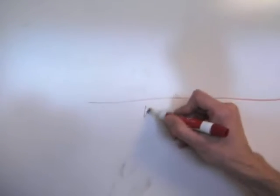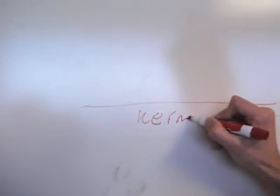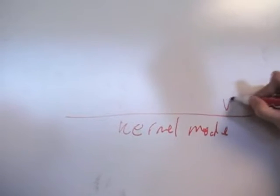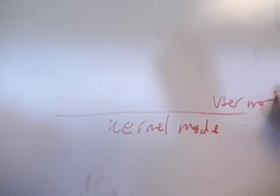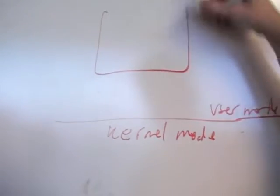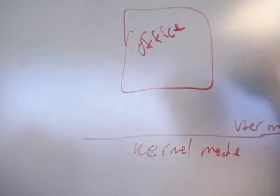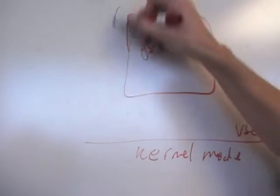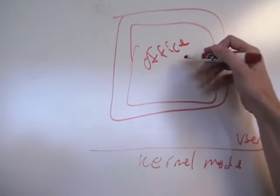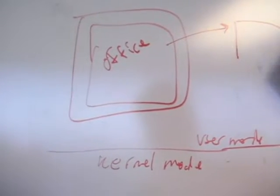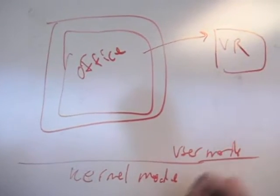You've got the Windows kernel in kernel mode, and then you've got user mode. This app - Office is one of the commonly virtualized apps with Softgrid - is now running in a bubble. So when Office makes changes to the registry, those changes go to a virtual registry, just call it VR.